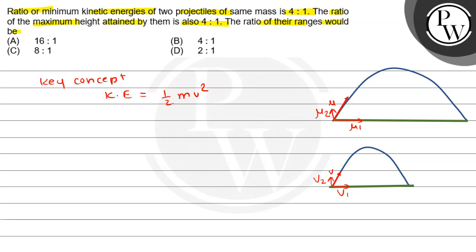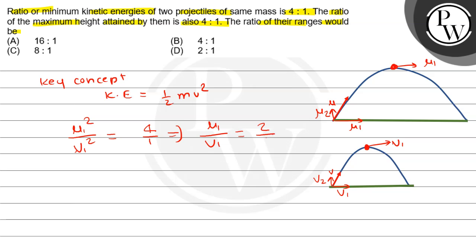When we go to maximum height, the kinetic energy is minimum because the vertical velocity becomes zero. So the minimum kinetic energy depends only on the horizontal velocity. Here we can see that u1 squared divided by v1 squared equals 4 to 1, which is given to us. That implies that u1 divided by v1 is equal to 2 to 1.